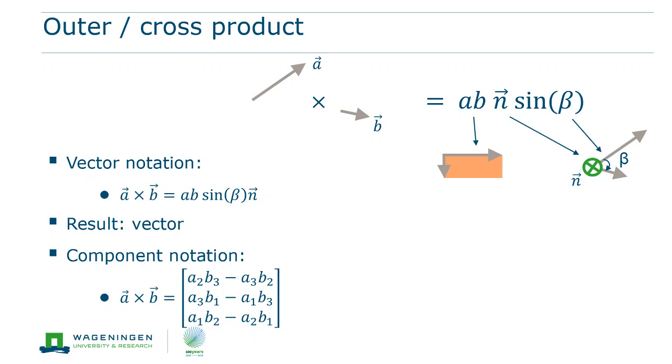If both vectors would have identical two and three components, the first element of the outer product vector would be zero. To summarize,